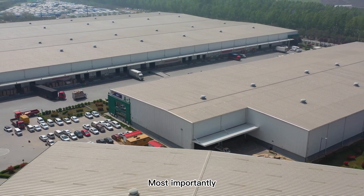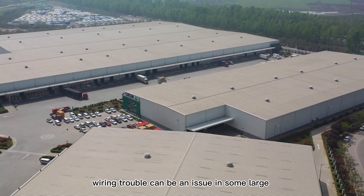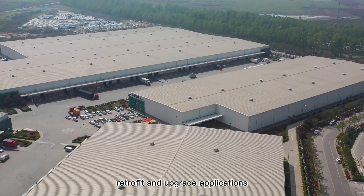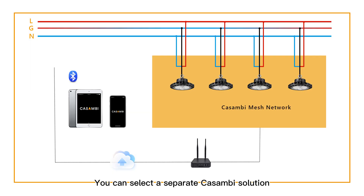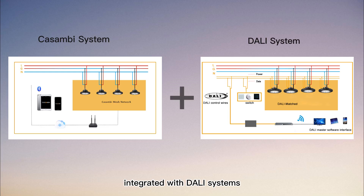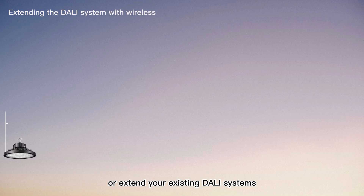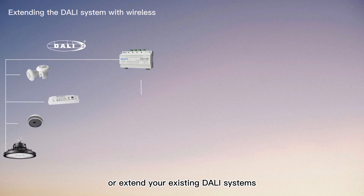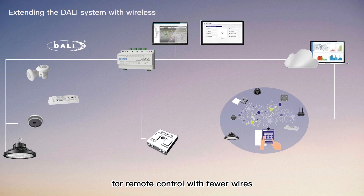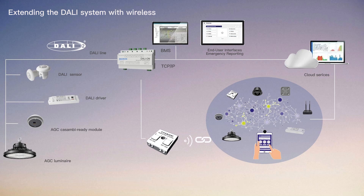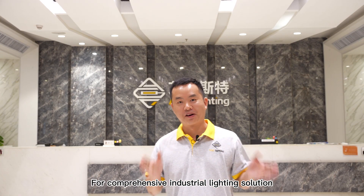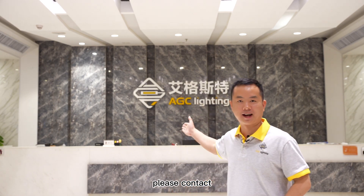Most importantly, wiring trouble can be an issue in some large traffic and upgrade applications, but we can make the process simple and efficient. You can select a standalone Kisambi solution, integrate it with DALI systems, or extend your existing DALI systems for remote control with fewer wires. The Kisambi ecosystem brings it all together due to its interoperability performance. For a comprehensive industrial lighting solution, please contact AGC.